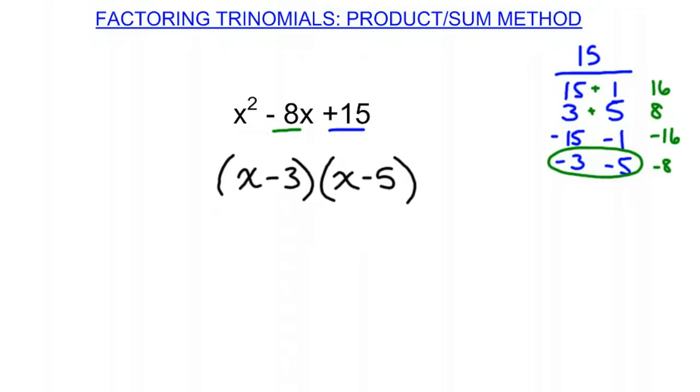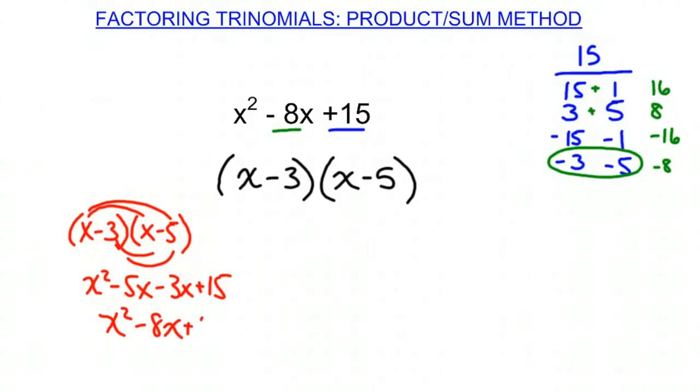What we can also do is we can check our work. x minus 3 times x minus 5. We distribute to both terms, and we get x squared minus 5x minus 3x plus 15. Combine like terms, x squared minus 8x plus 15. That is what we started with, so this is our solution for factoring that trinomial.